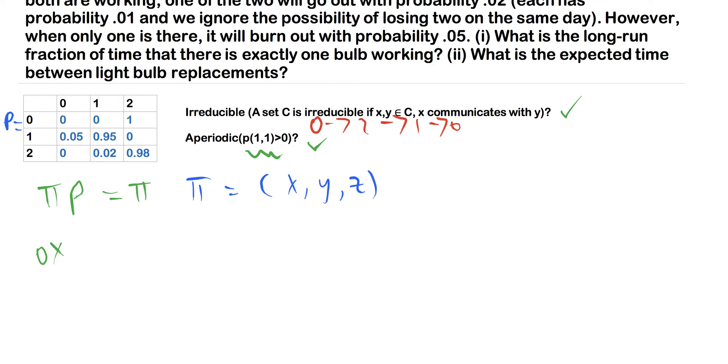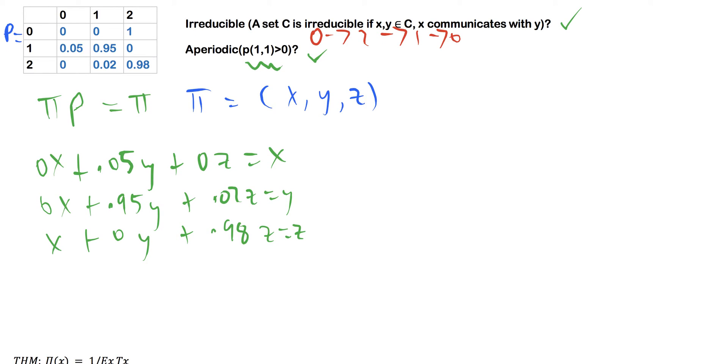There's online versions. You can program it if you want, however you want to get that done. But I'm just going to quickly write what this system of equations looks like. Plus 0.95y plus 0.02z equals y. And then we've got x plus 0y plus 0.98z equals z. And then just remember that since π is a probability vector, we're also going to have x plus y plus z equals 1.